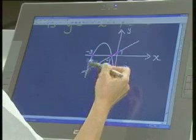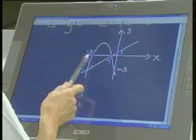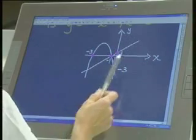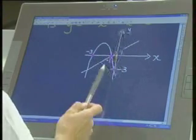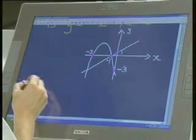We have a parabola. We have a straight line. The parabola is going through negative 3 and negative 1. And the straight line is going through 1. And the parabola is also going through negative 3. And the question is, what is the equation of the parabola?